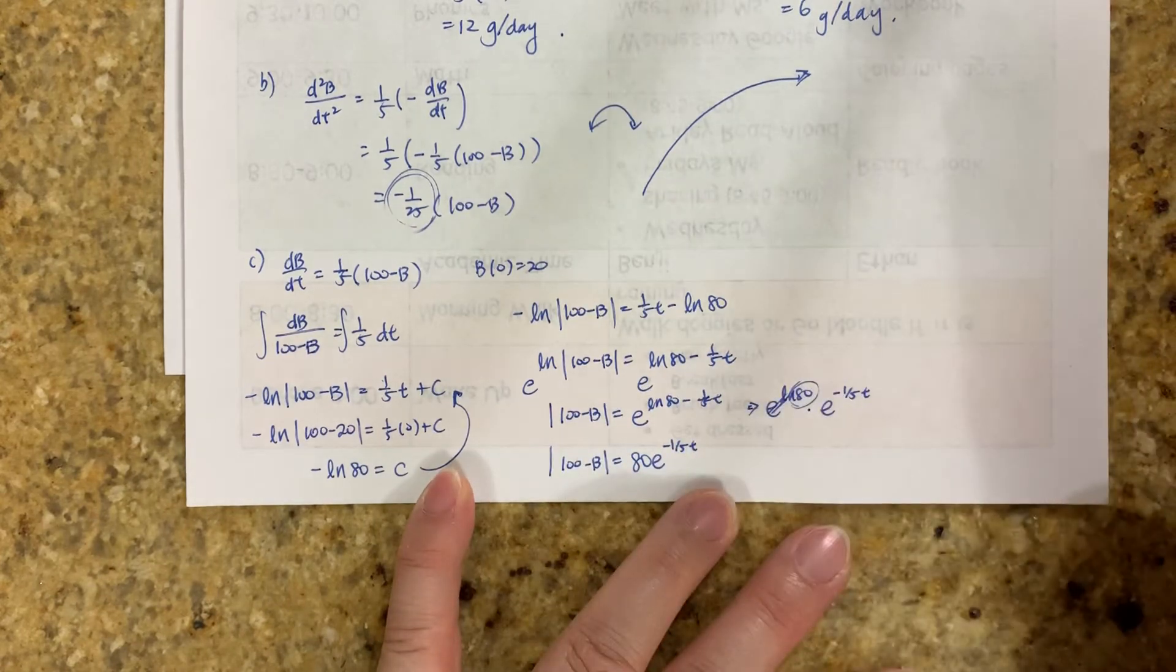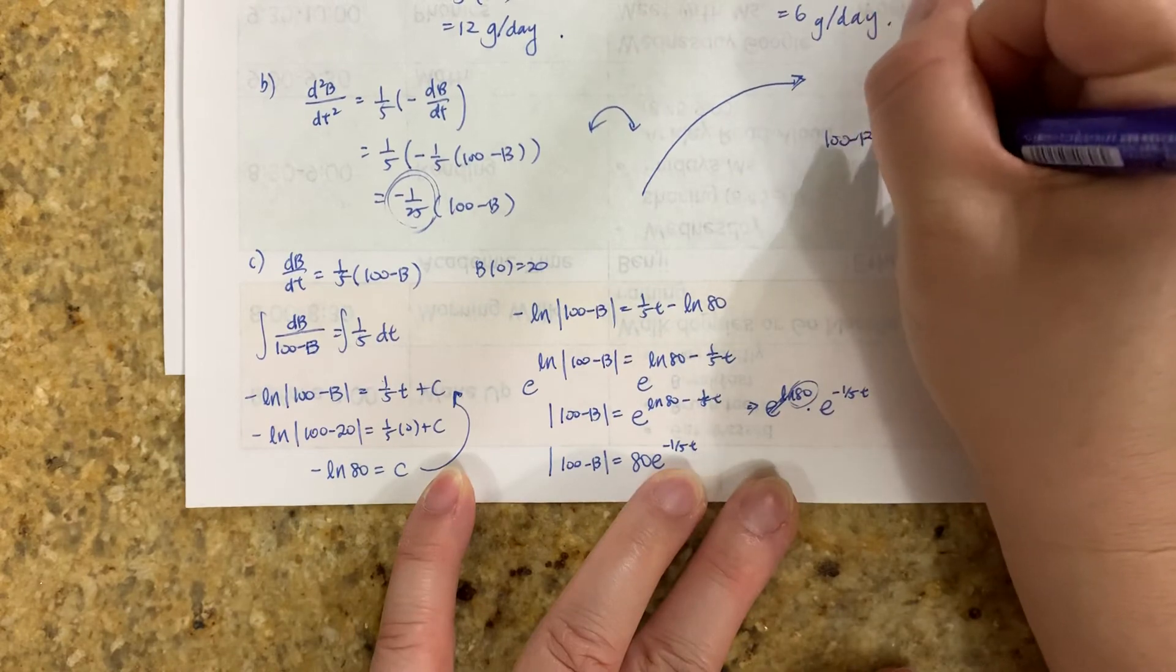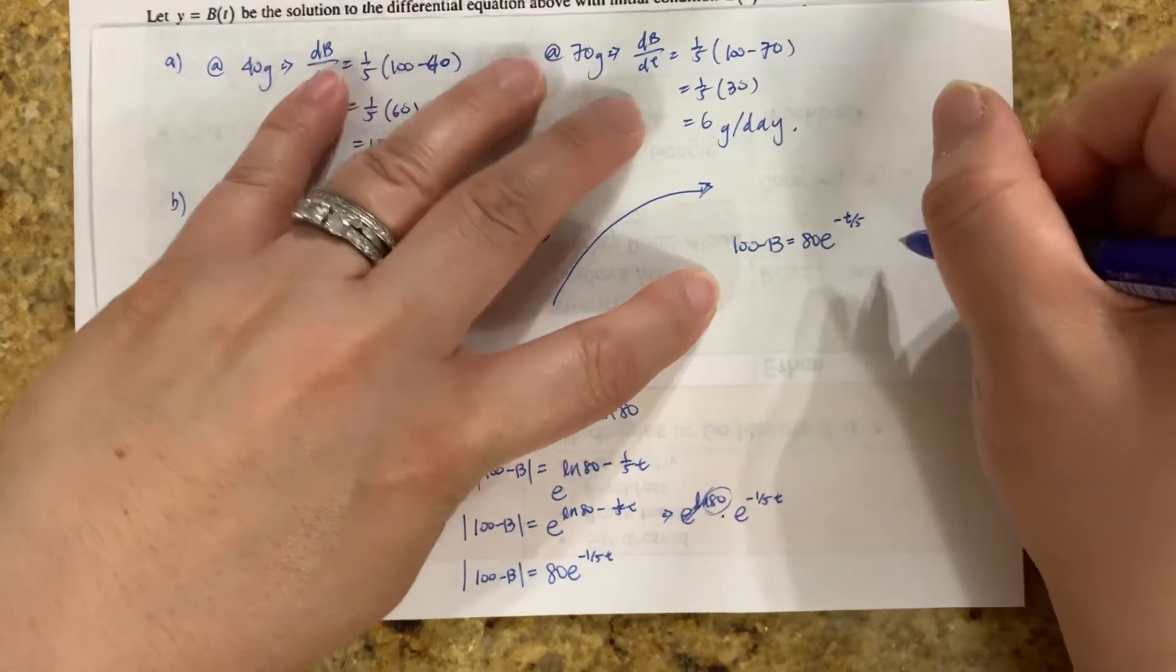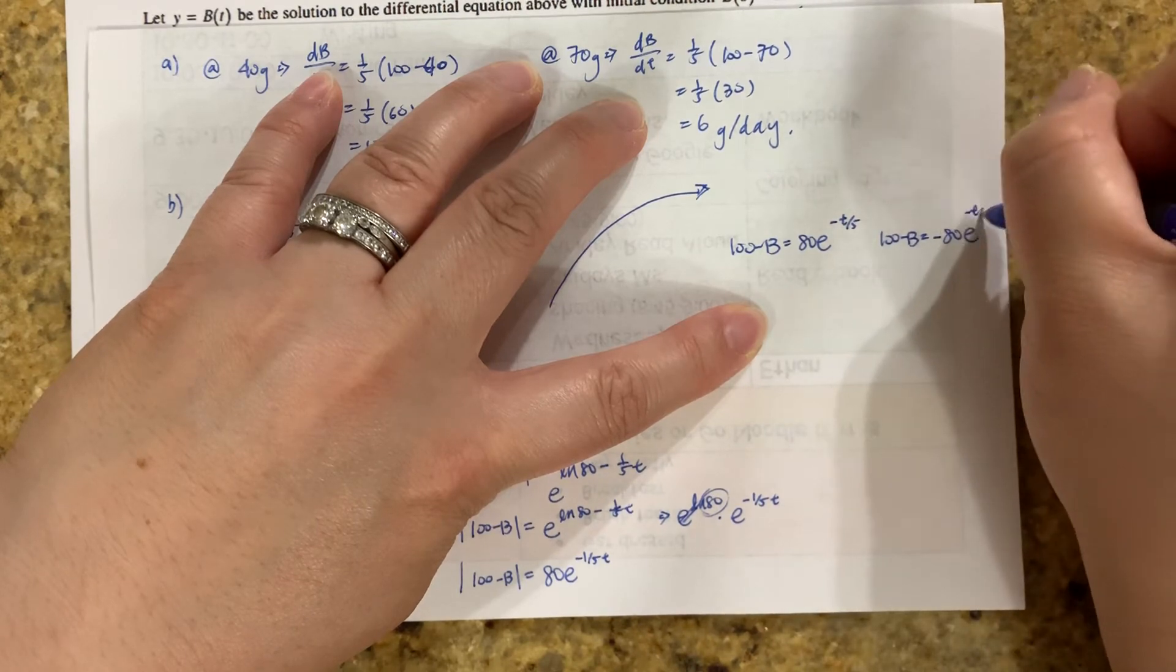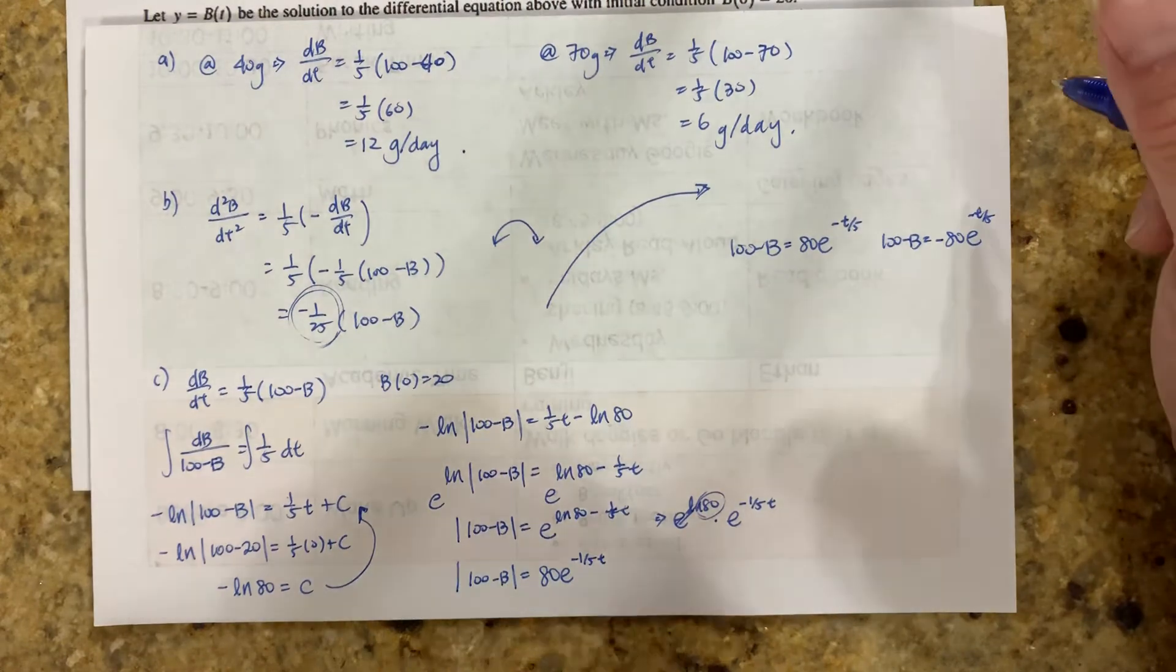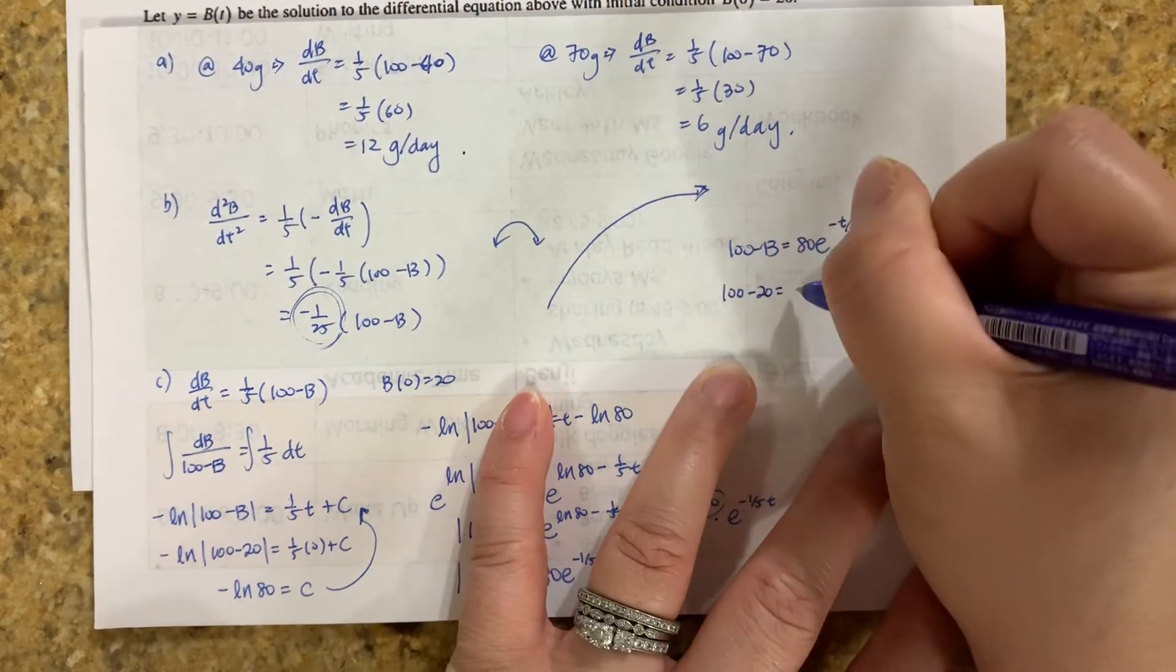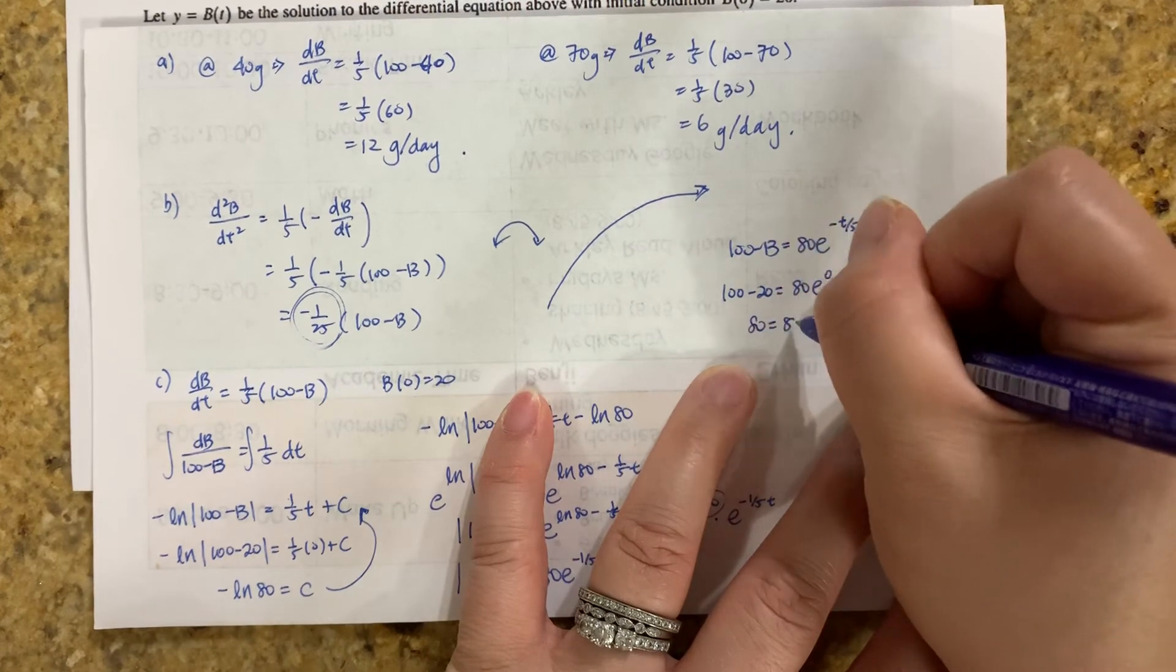So an absolute value means you have two possible answers. You have a positive and negative answer. You have 100 minus b equals 80 e to negative t over 5. Or 100 minus b equals negative 80 e to the negative t over 5. So see which one of these gives you the initial value of 0 and 20. So let's plug in the 0 and see if we get 20. So 100 minus 20 equals 80 e to the 0. 80 equals 80. This one looks good.